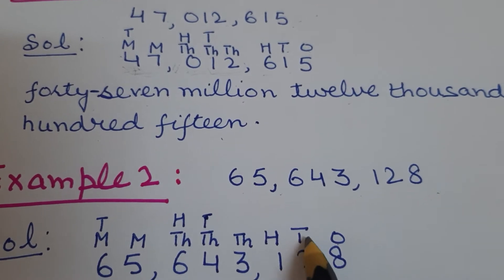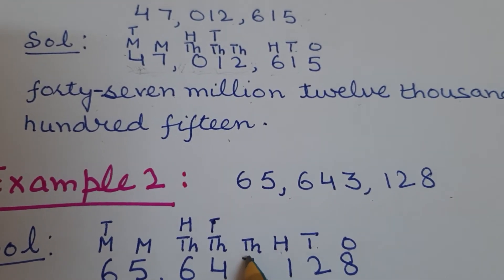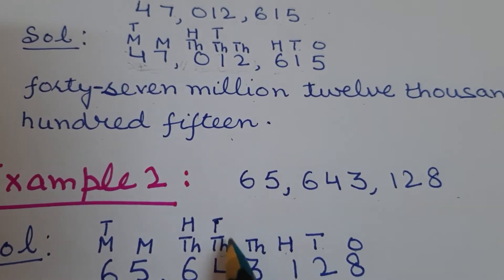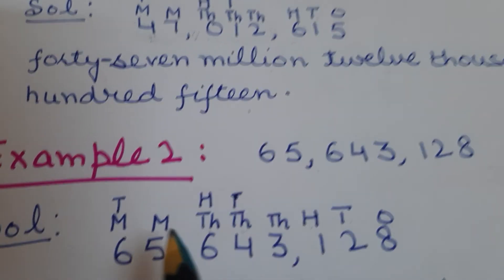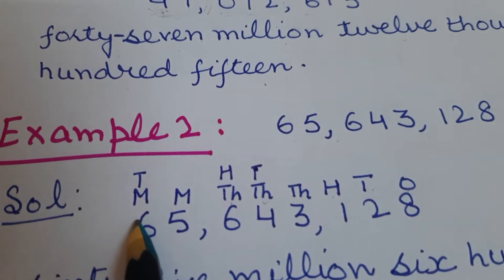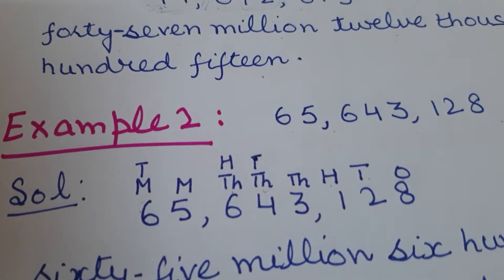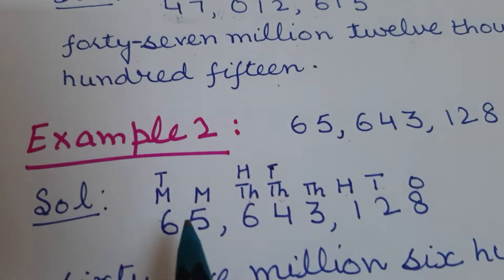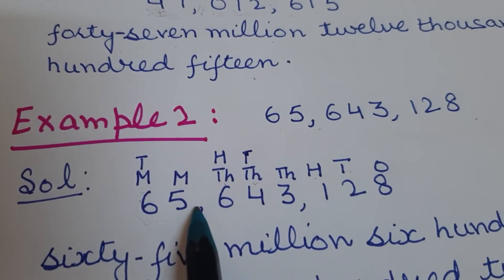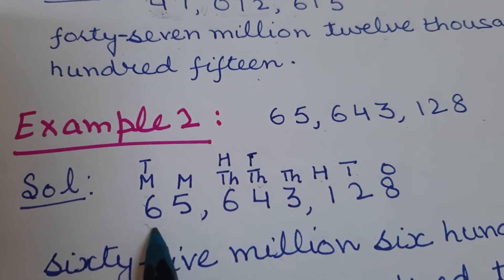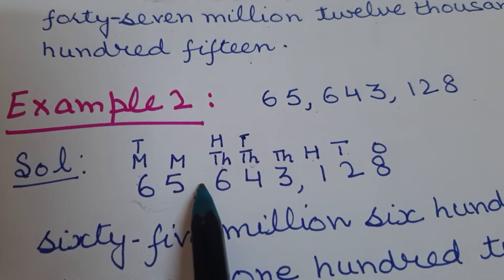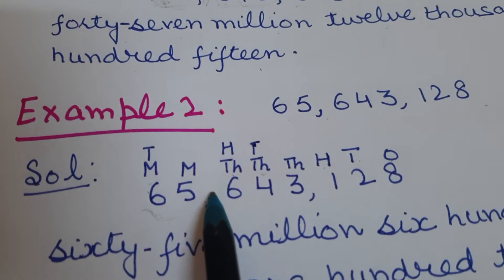Last place is ten million. We will write their number name according to their periods. First period is of millions.